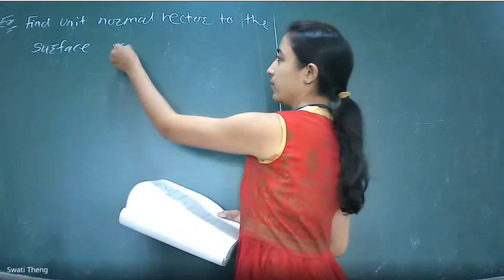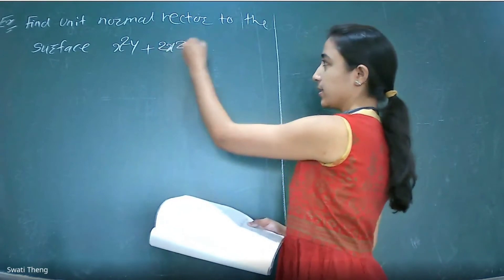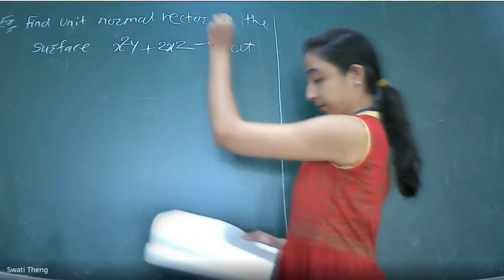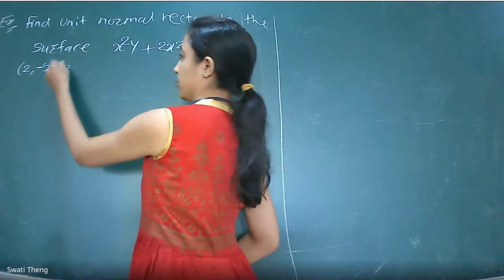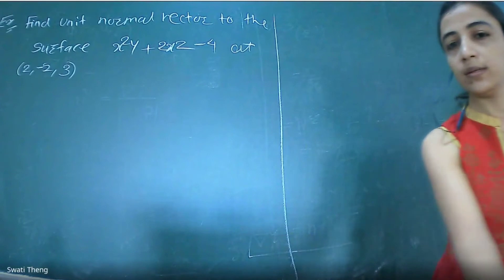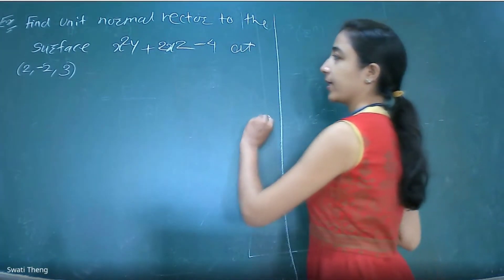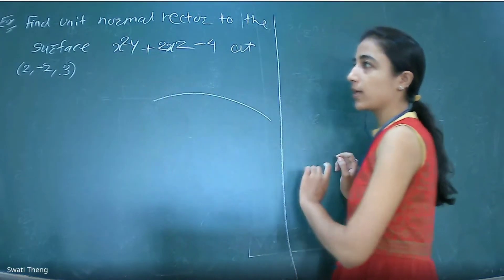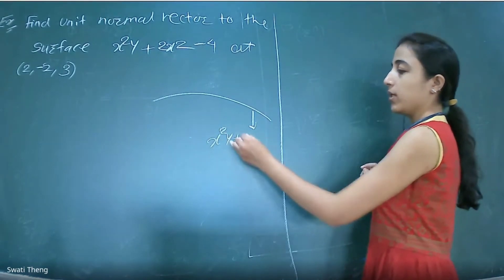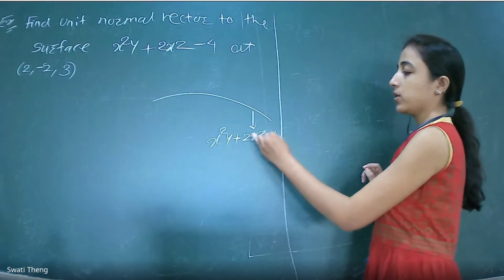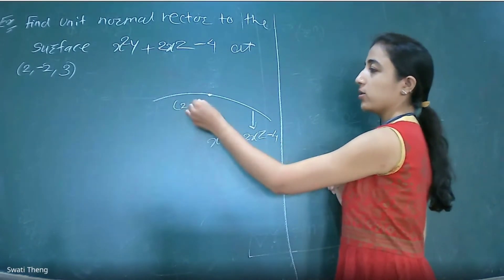The surface is x²y + 2xz = 4, at the point (2, -2, 3). We have to find the unit normal vector at this particular point. The surface equation is x²y + 2xz = 4 and we evaluate at point (2, -2, 3).